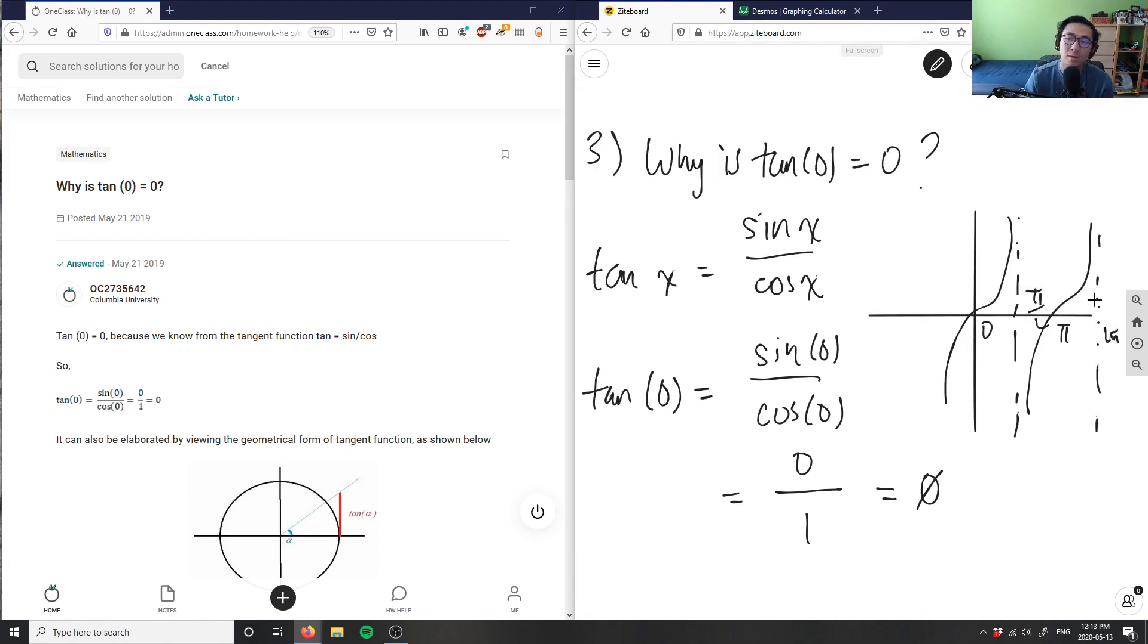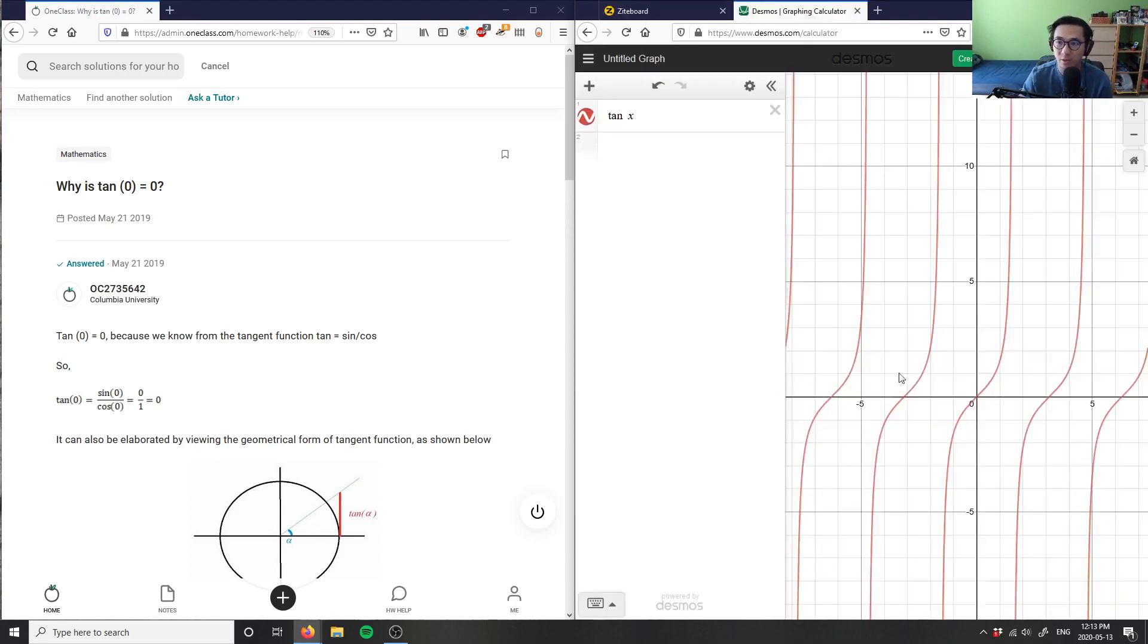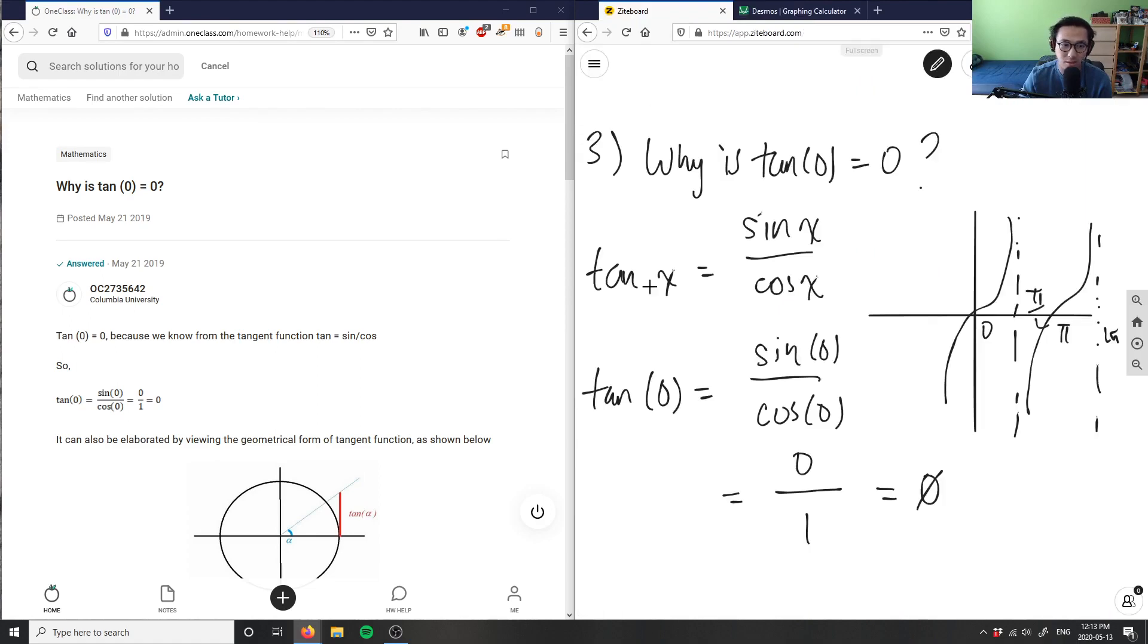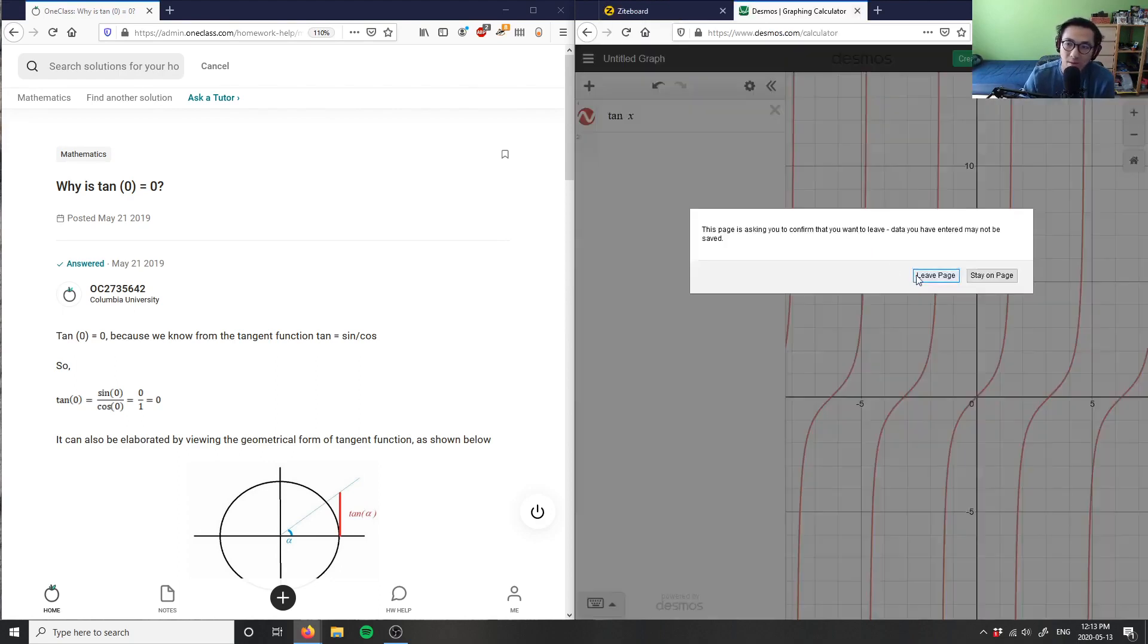This here is zero. This here would be pi. And this asymptote here is pi over two. And this here is two pi. That's going to be my tangent function, like given at Desmos here. If I know why is tangent zero, we'll add zero here. The point here is zero. Graphically, you can basically say tangent zero equals zero as well.